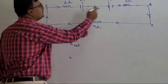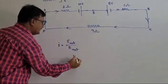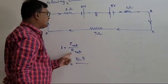Here, the net EMF - these two EMFs are opposing each other. Therefore, 10 minus 5, and net resistance.